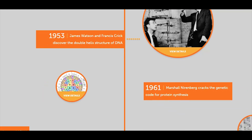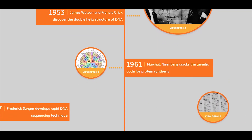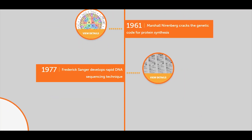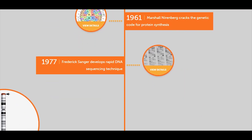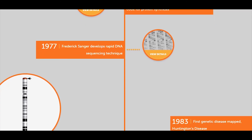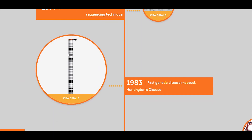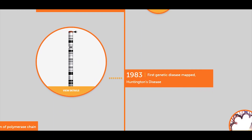In 1961, Marshall Nirenberg cracked the genetic code for protein synthesis. In 1977, Frederick Sanger developed a rapid DNA sequencing technique, which today we know as Sanger sequencing.